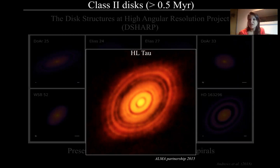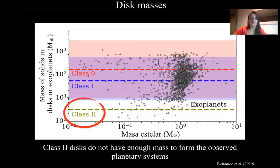If these structures are related with planet formation, then we have to think that the first steps of planet formation may occur earlier than 0.5 million years. So this is what we think nowadays, and there was a recent work this year about the mass of solids in disks in Class 2, Class 1, and Class 0 disks, and also mass of solids in exoplanets that we can observe with the Kepler mission or TESS. The conclusion of this work was that Class 2 disks do not have enough mass to form the observed planetary systems, and therefore Class 0 and Class 1 disks are more suitable for the first steps of planet formation.